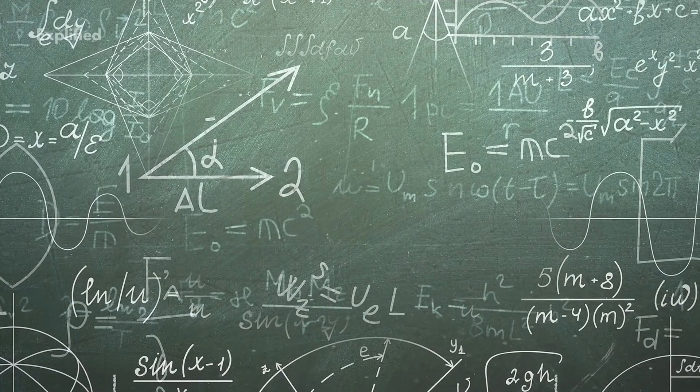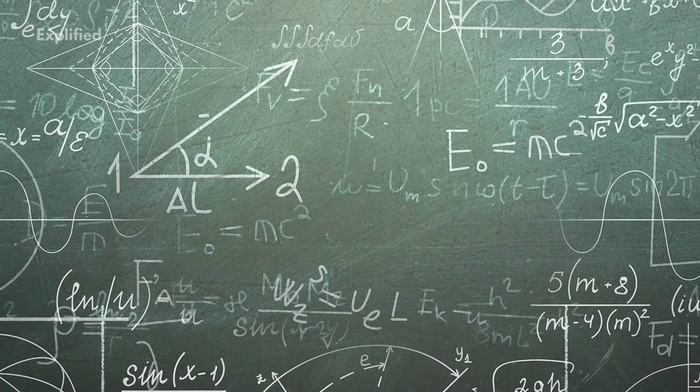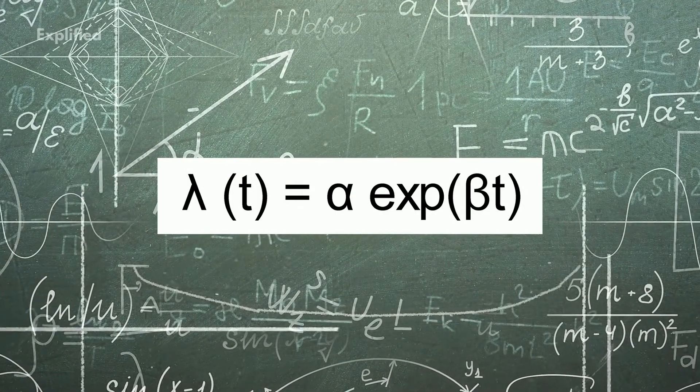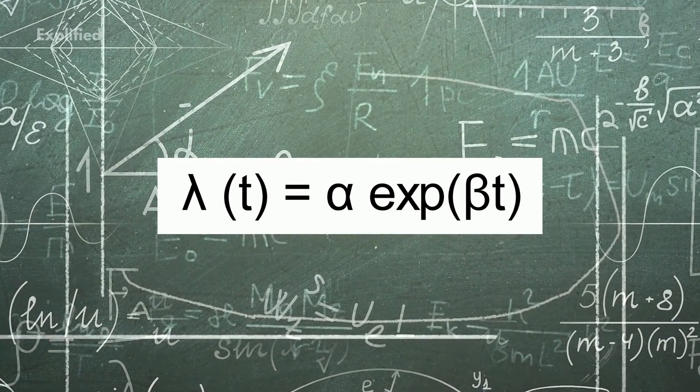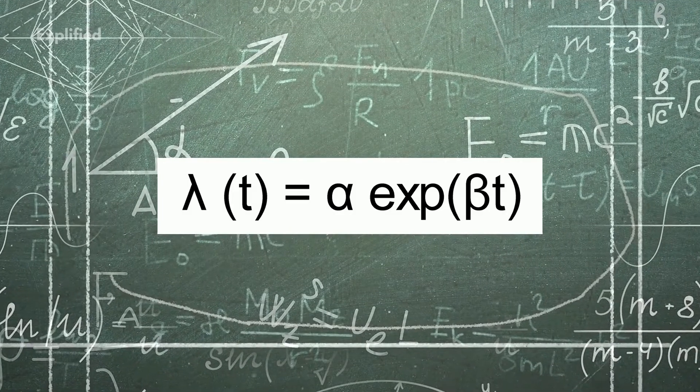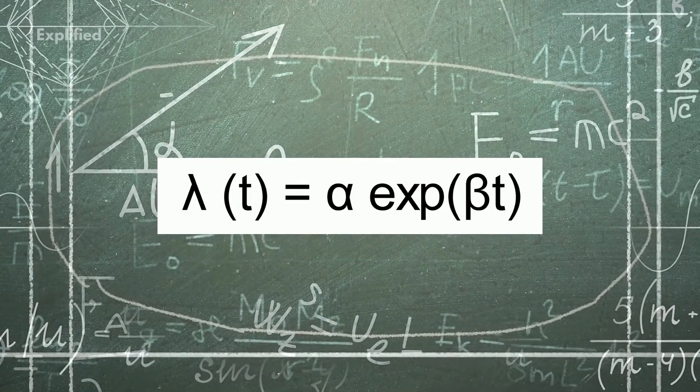The law is mathematically expressed as λ(t) = α exp(βt), where lambda was found to increase exponentially with time, in which alpha and beta are constants.